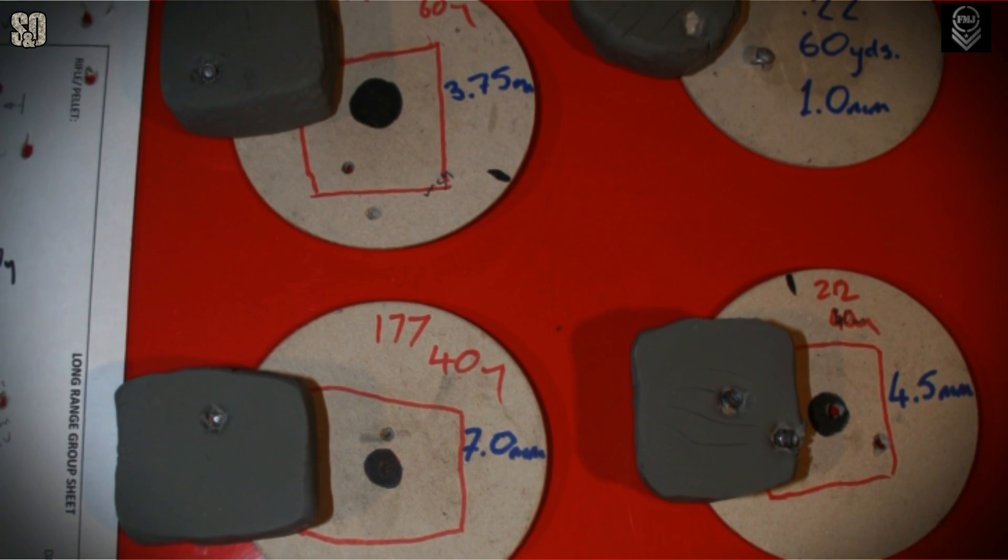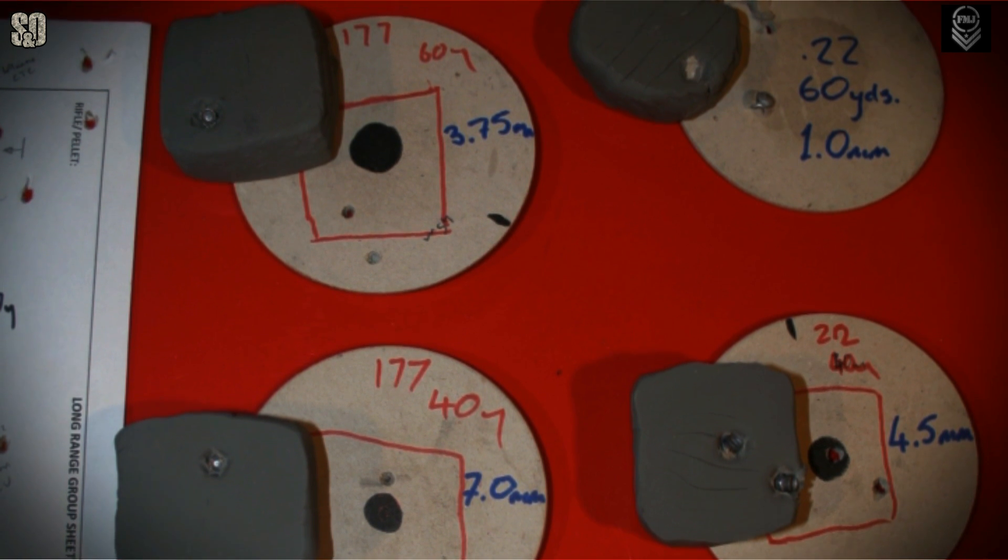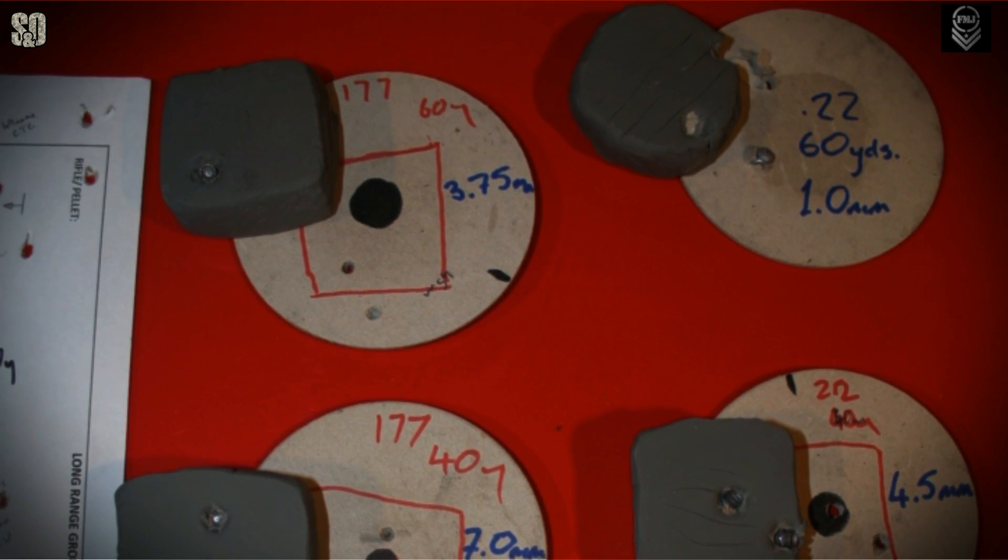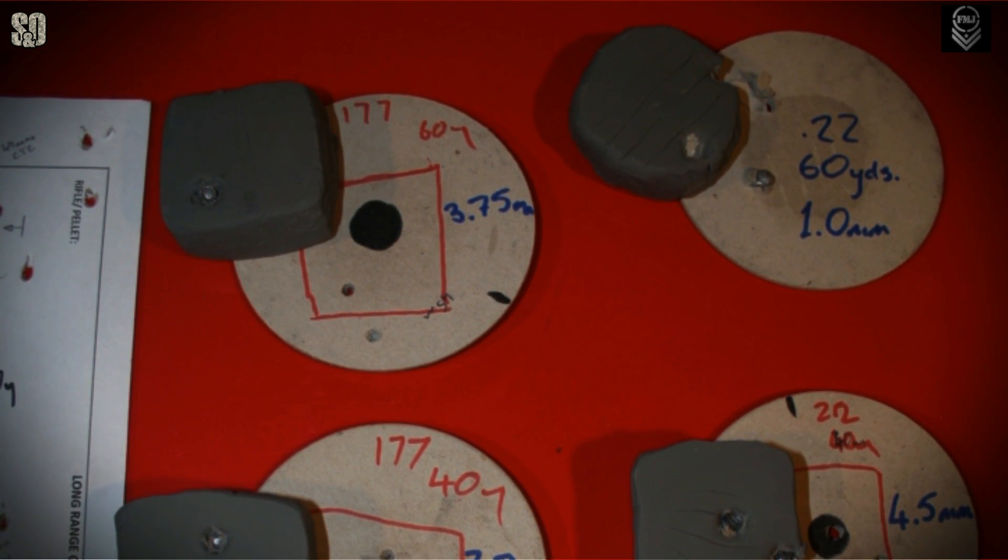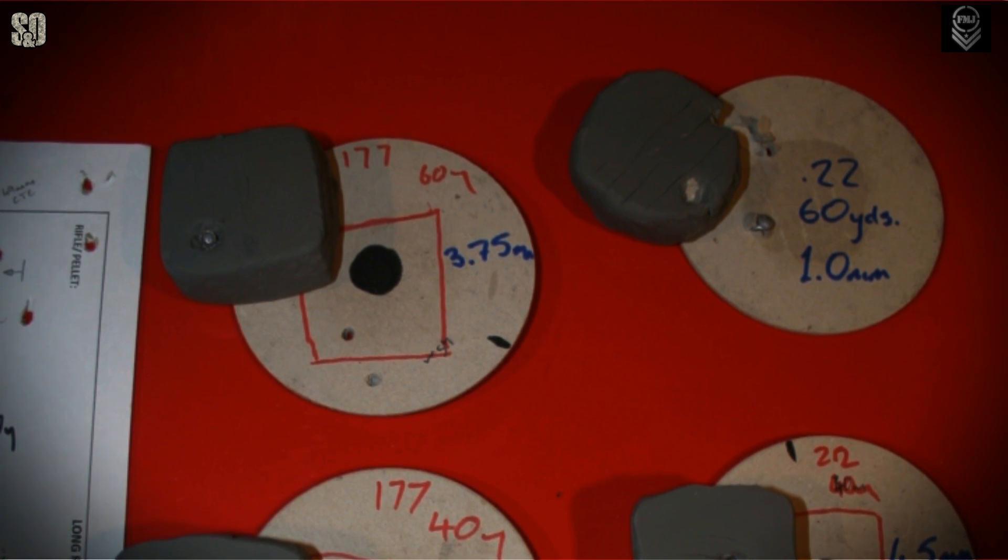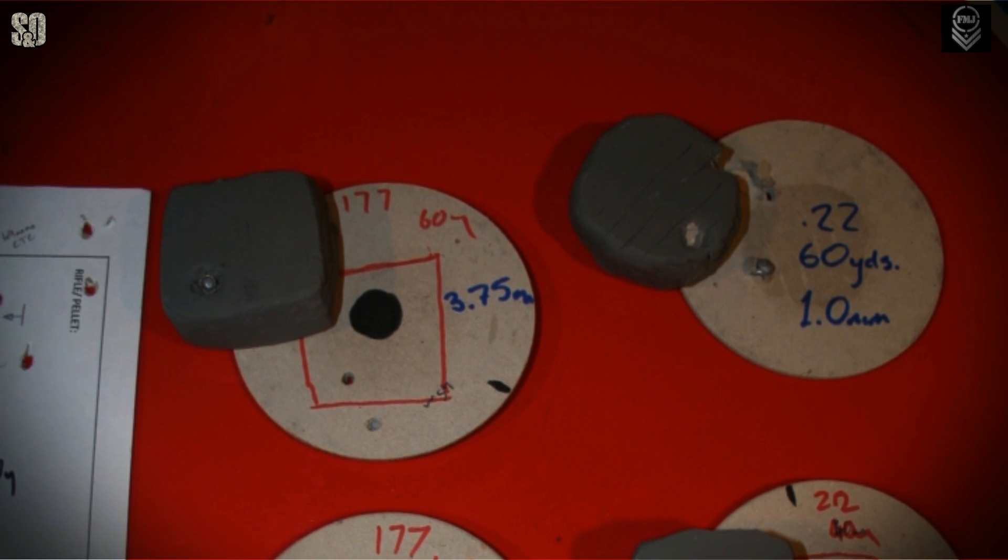At 60 yards, 177 maintains direction and causes a respectable amount of damage. The 22 gets lodged in the card, having spent all its energy trying to get its fat ass into the meat. The bit that does get in looks to merely bruise the material, not giving us belief that it caused sufficient trauma. So, 60 yard, once again, it goes to 177.